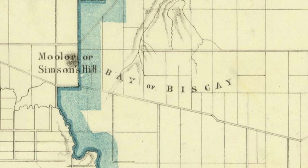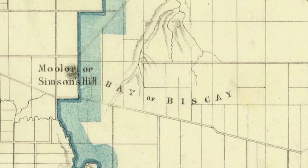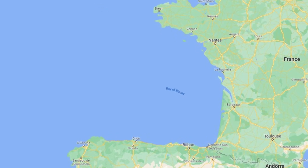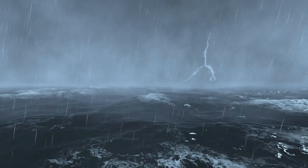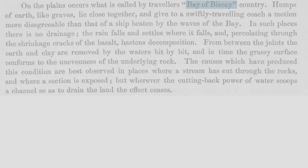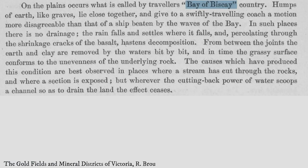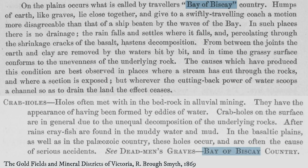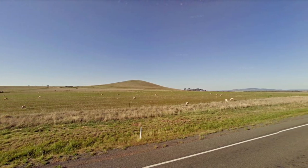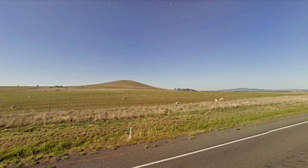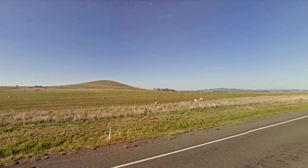Another interesting feature you may come across is Bay of Biscay Country. Named after the Bay of Biscay, which is notorious for its rough seas and violent storms, Bay of Biscay Country describes the dangerous and uneven ground which can be present in certain areas. Crab holes can be found on the surface, which were often the cause of serious accidents. They can occur on the basaltic plains, like this one near Carrasbrook, and are generally due to the unequal decomposition of the underlying rock.